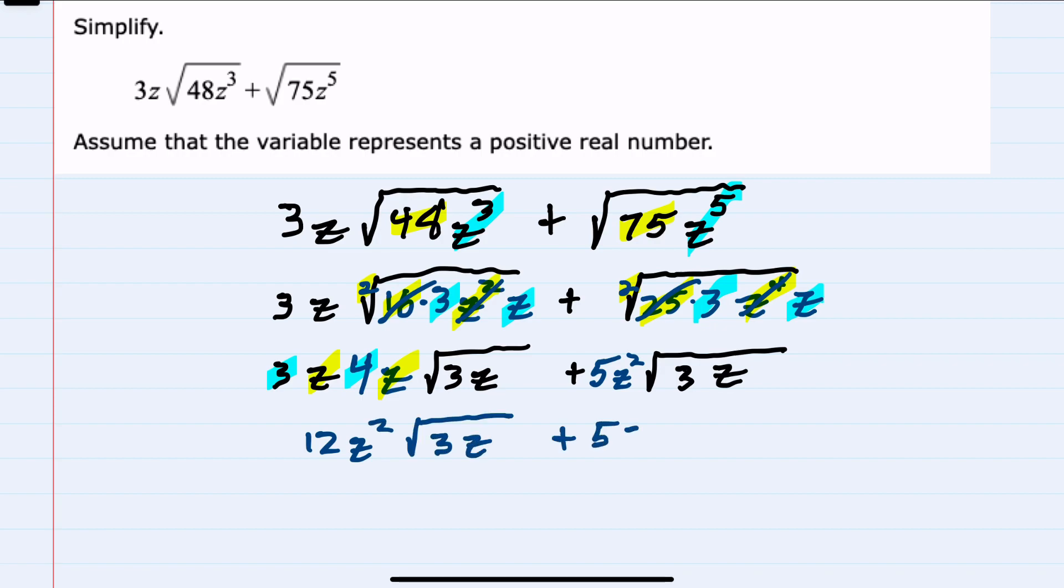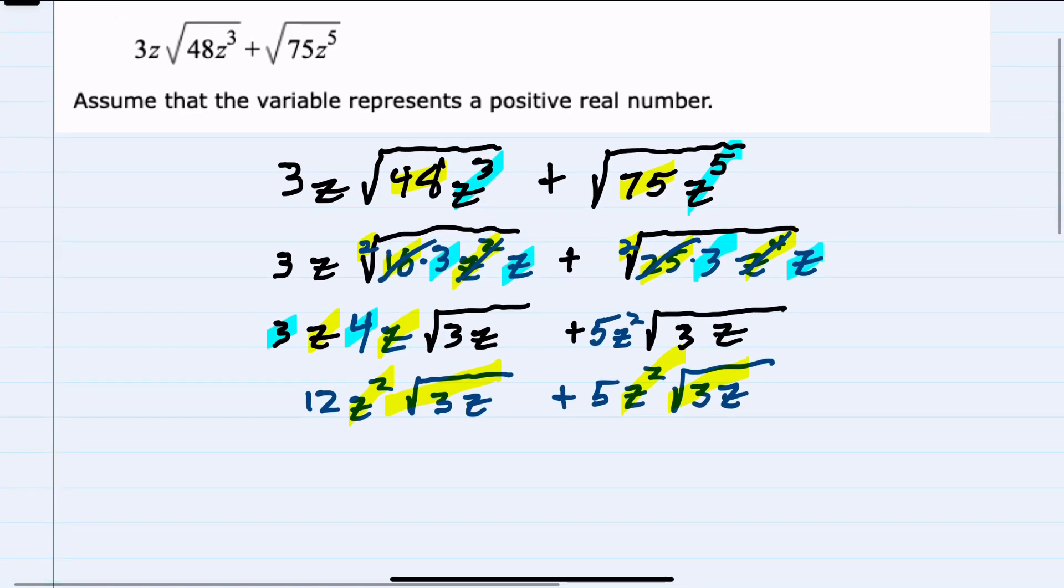In that second expression, I can now see that I have both the variable and the radical as the exact same in both expressions being added. Since the z²s and square roots of 3z are exactly the same, these are like terms we can combine. Since I have 12 plus 5, that will give me 17z² square root of 3z.